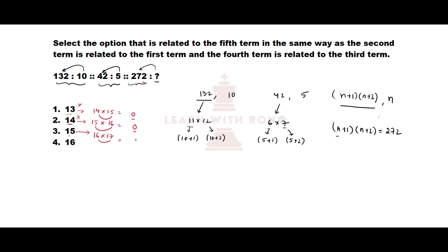If n=15: (16)(17) — unit digit of 6×7 is 42, giving unit digit 2, which matches. Let's check n=16: (17)(18) — unit digit of 7×8 is 56, giving unit digit 6, not our option. So the only remaining option is n=15, which is our answer.